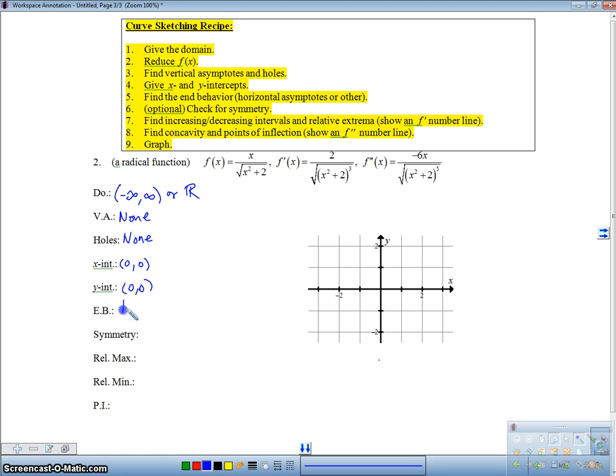All right, let's think about our end behavior, or our horizontal asymptotes, if we have any. So do we have any horizontal asymptotes? Well, let's think. If I take the square root of x squared, I get x, and x over x is 1. So we are going to have a horizontal asymptote. The question is, is it going to be 1 or negative 1? Well, it really depends on if we're going out to negative infinity and positive infinity. So we've got to be careful with these square roots of squares, right?